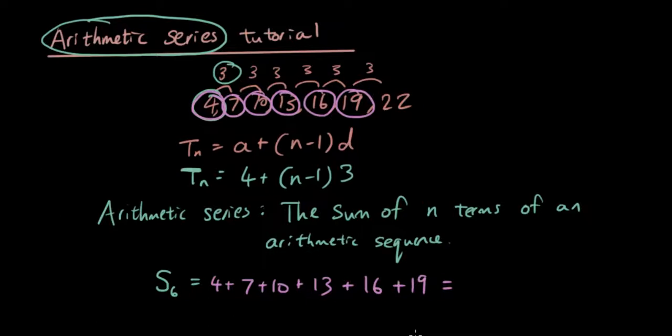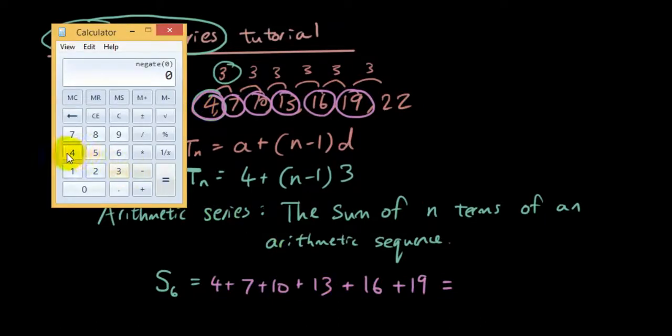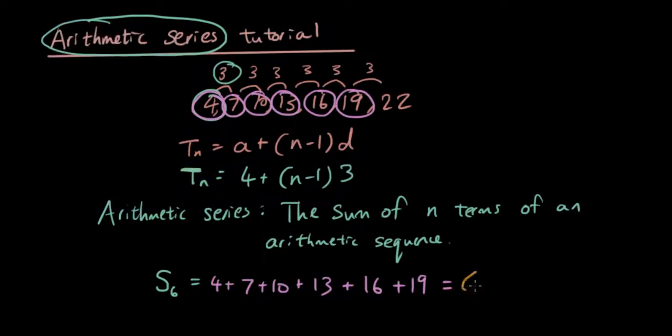So let's just write the sum of terms from the first term to the sixth term of the arithmetic sequence. So I am going to type all this in the calculator. 4 plus 7 plus 10 plus 13 plus 16 plus 19. And the answer is 69.